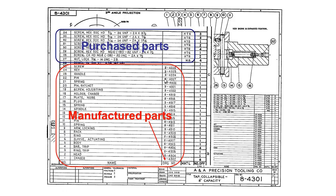In the top portion of the list we have purchased parts — standard parts such as screws, hex screws, dowel, and lock nuts. These don't have a drawing number because they are commonly available; you could go to your hardware store and buy them. What we do have is a material designation. We don't necessarily have materials listed for manufactured parts since some could be multi-component parts made of several different materials. For purchased parts, you can see HTS standing for high tensile steel, and for the nut we have mild steel, MS.